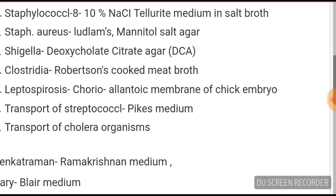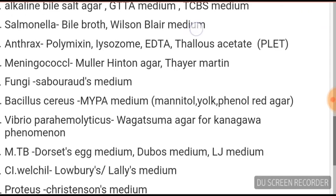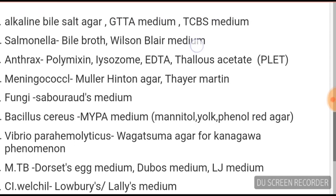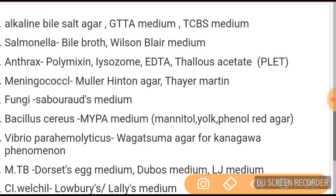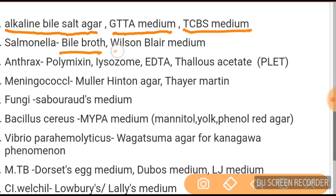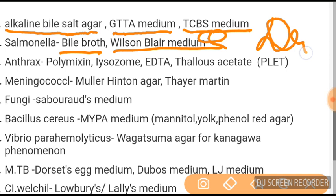Coming to different selective media: for cholera, we do plating on alkaline bile broth agar, GTTA medium, and TCBS medium. For Salmonella, it is bile broth and Wilson-Blair medium — very important. Wilson-Blair is for Salmonella.